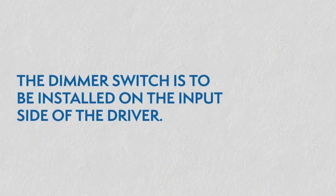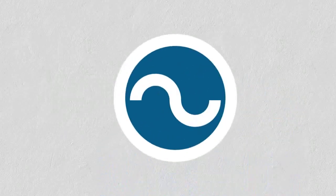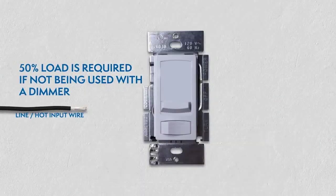With the power turned off, the dimmer is to be installed on the input side of the driver, 120 V. 50% load is required if not being used with a dimmer.